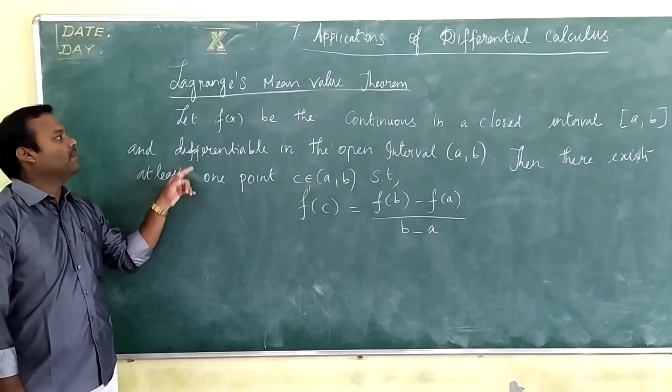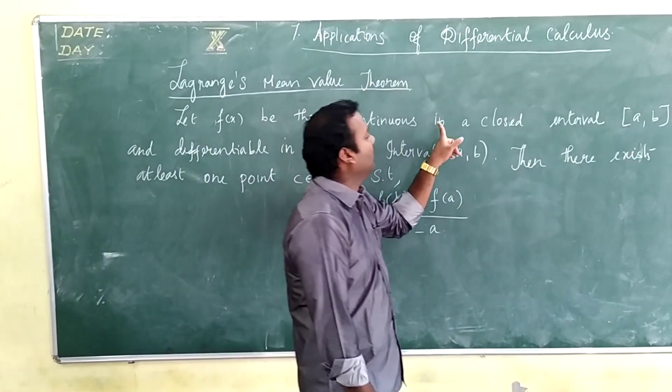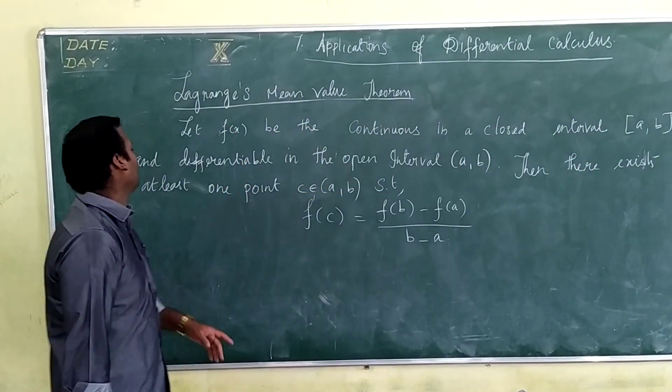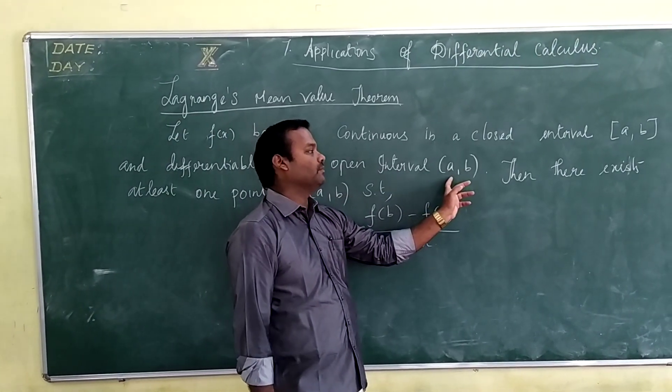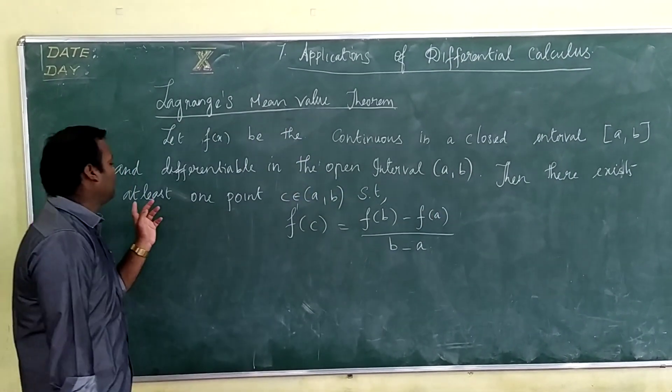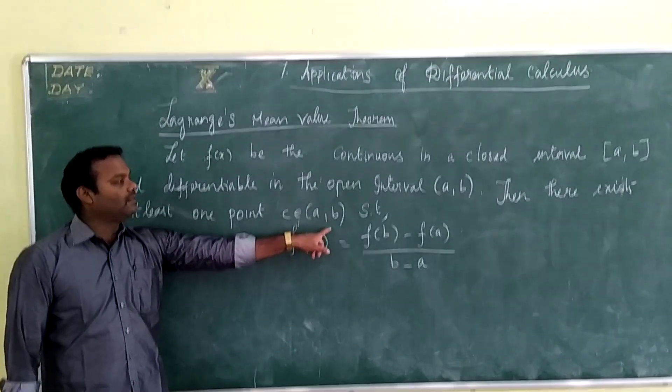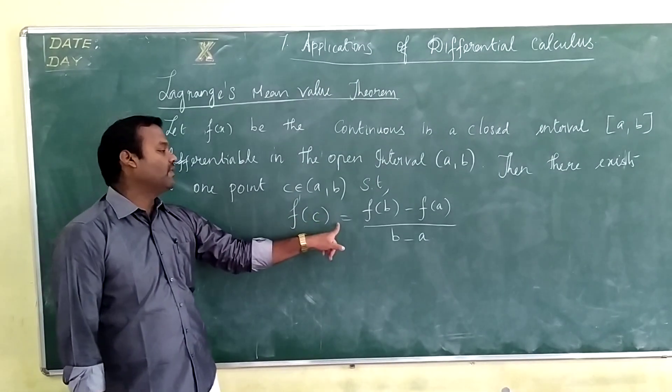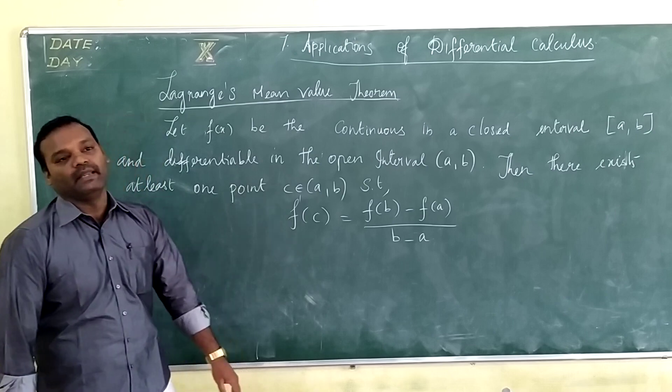The statement of this theorem is: let f(x) be continuous in closed interval [a, b] and differentiable in the open interval (a, b). Then there exists at least one point c belongs to the open interval (a, b) such that f'(c) equals f(b) minus f(a) divided by b minus a.